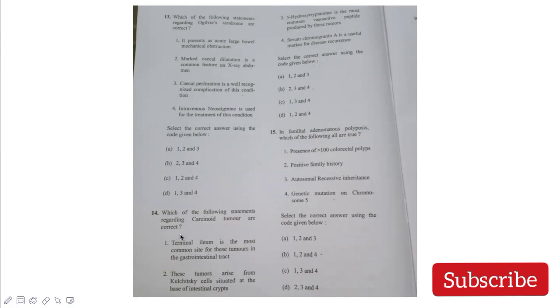Which statements regarding carcinoid tumors are correct? Terminal ileum is most common site in GIT, they arise from Kulchitsky cells, 5-hydroxytryptamine is the most common peptide, and serum chromogranin A is a useful marker. This is controversial, but according to Bailey and Love, appendix is the most common site for these tumors. So the wrong option is terminal ileum being most common. Answer is 2, 3, and 4. In familial adenomatous polyposis: presence of more than 100 colorectal polyps - true, positive family history - yes, autosomal recessive - no, it's autosomal dominant. Genetic mutation is on chromosome 5, the APC gene. Answer is 1, 2, and 4.